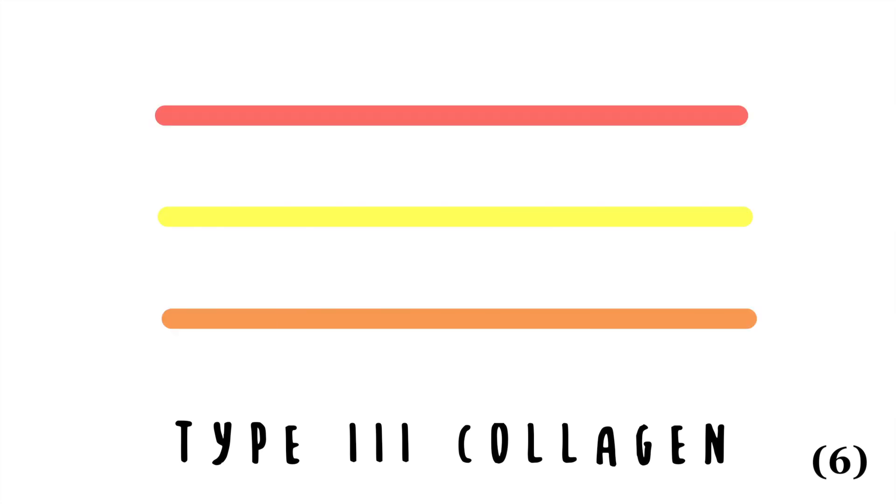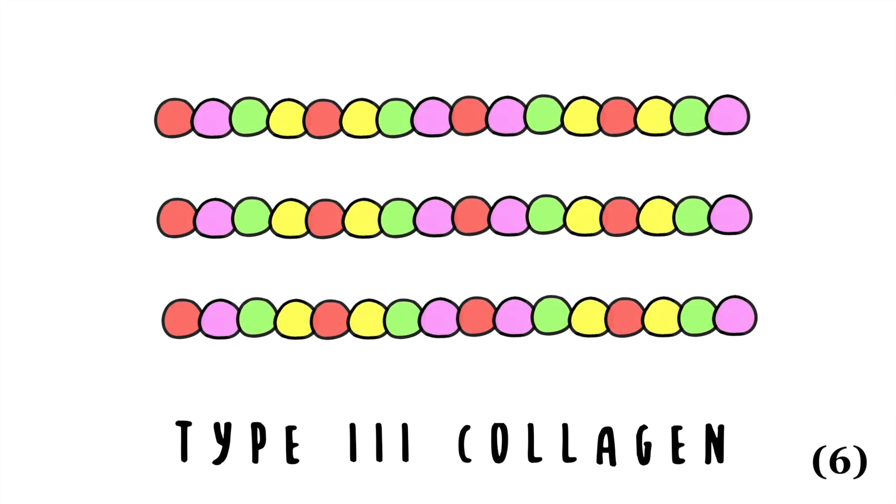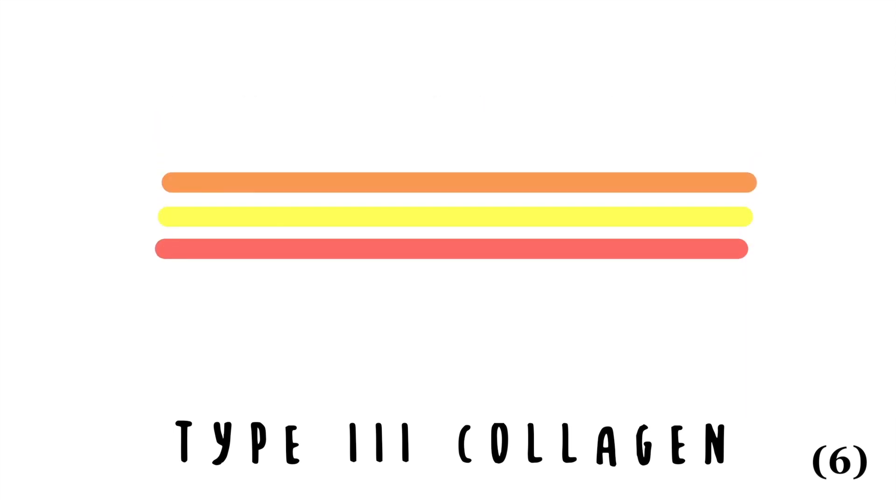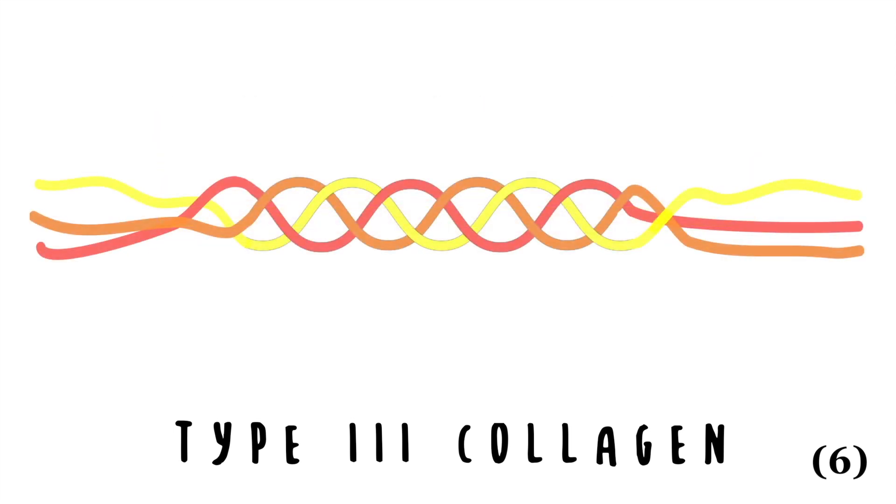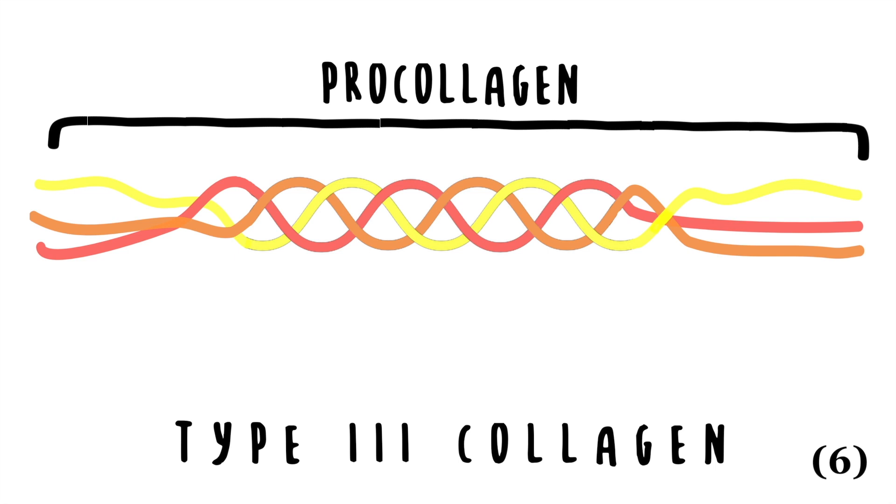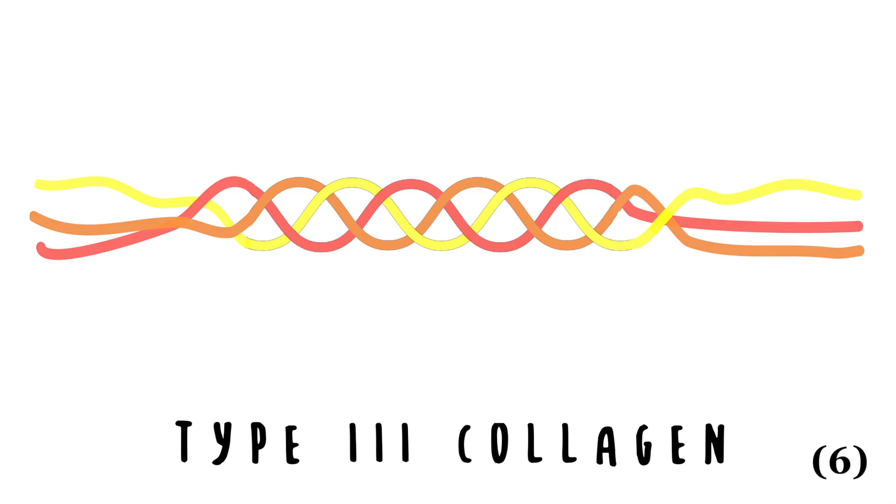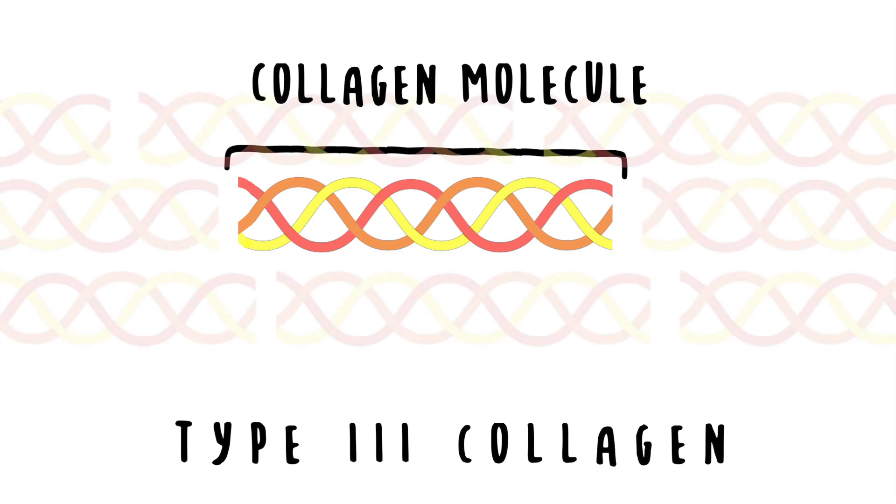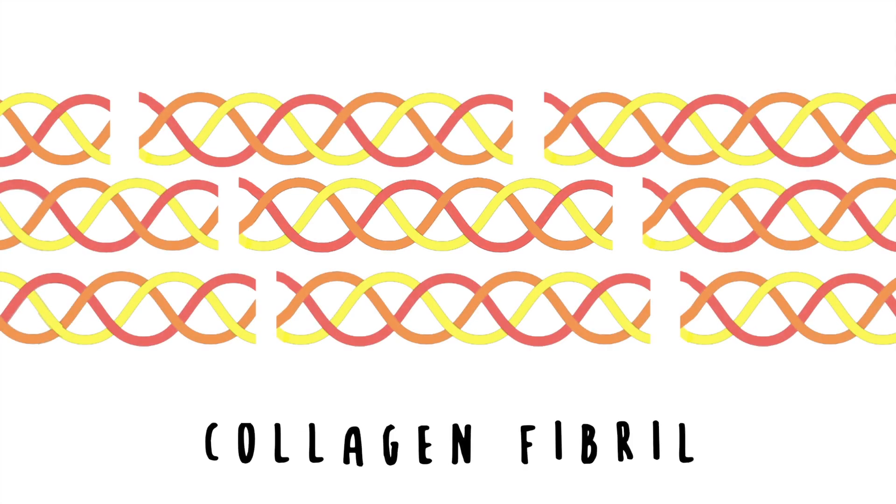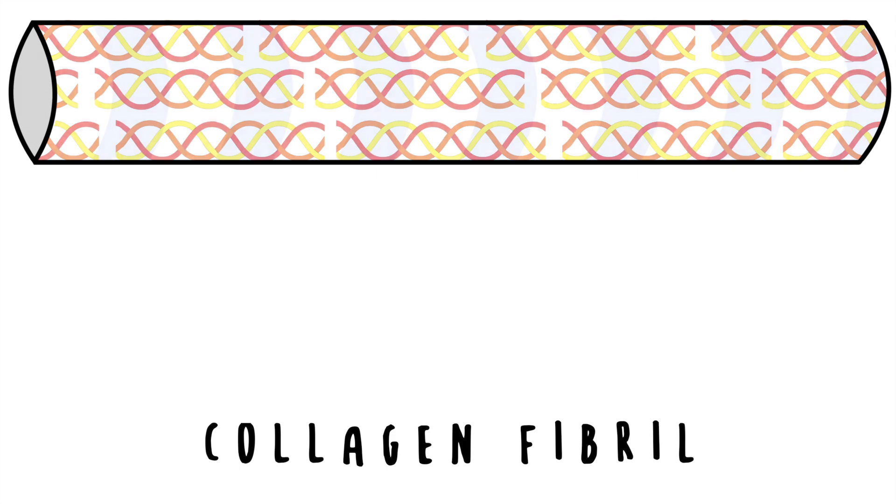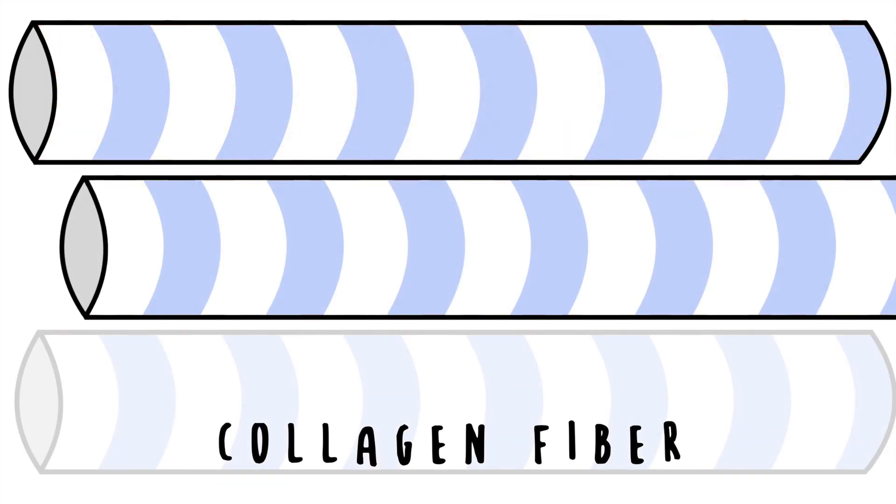In type 3 collagen, like most collagen proteins, 3 polypeptide chains, which are linear sequences of amino acids, loop around each other forming a triple helix. This makes a procollagen. The loose ends of the procollagen are then cut off to make a perfect spring. The collagen molecule is thus formed and they assemble together to make a collagen fibril. These fibrils in turn assemble together to make a collagen fiber.